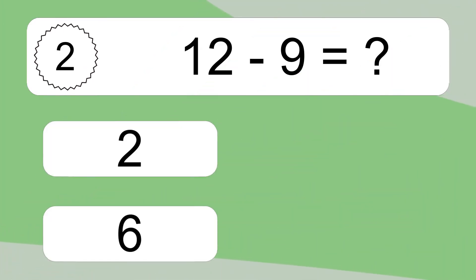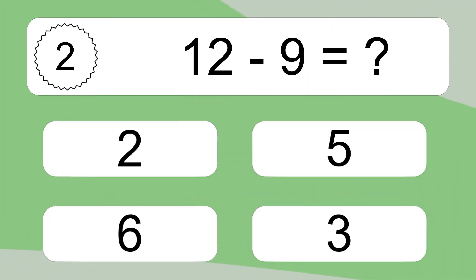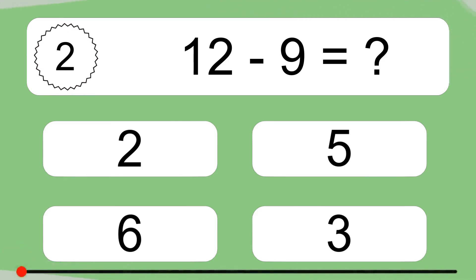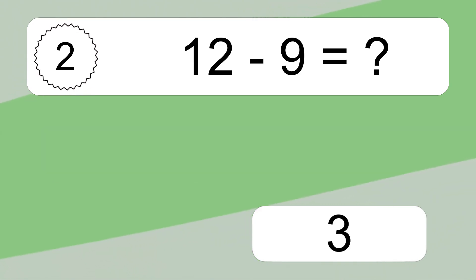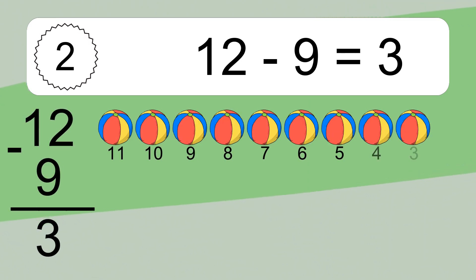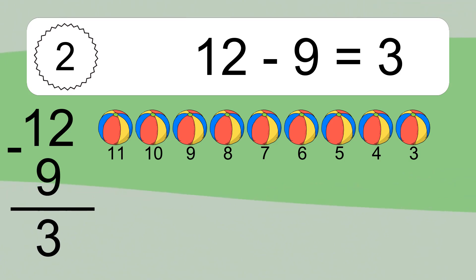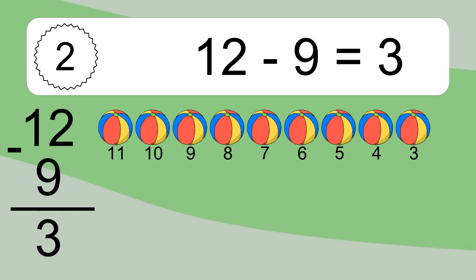12 minus 9 equals what? 12 minus 9 equals 3. Let's count it: 11, 10, 9, 8, 7, 6, 5, 4, 3.